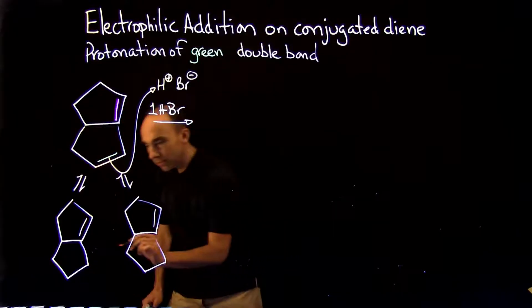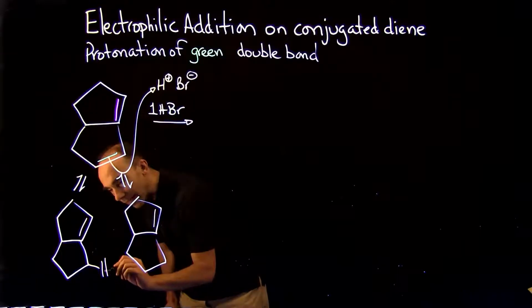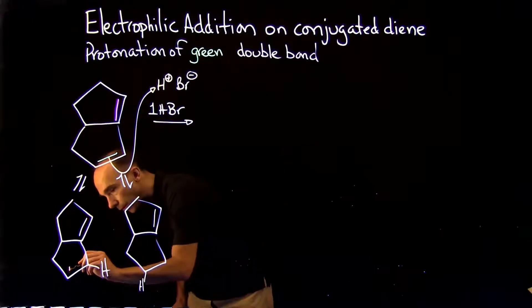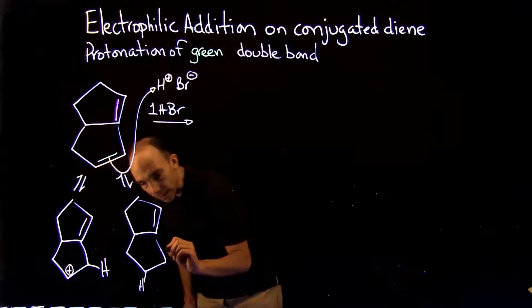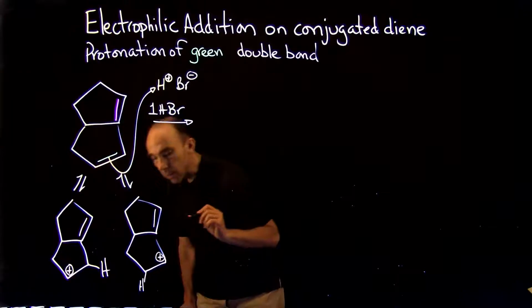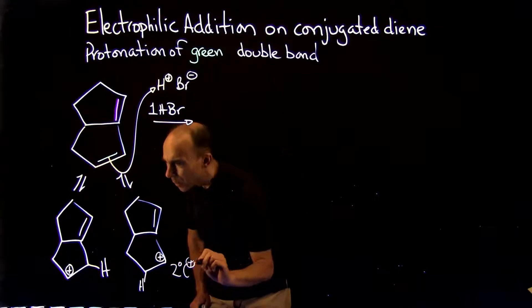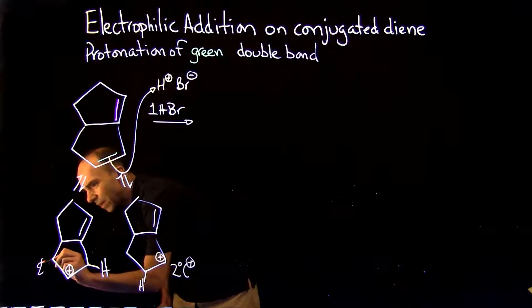And what we have is addition of the hydrogen at that position or this position, resulting in two different carbocations, both secondary. But beside the fact that they're both secondary, one is more stable than the other.